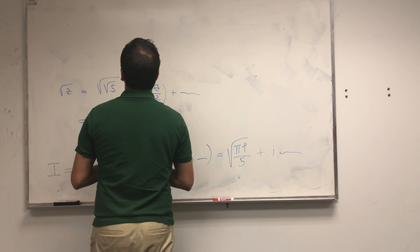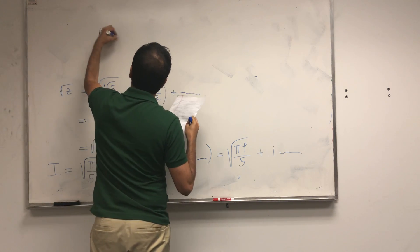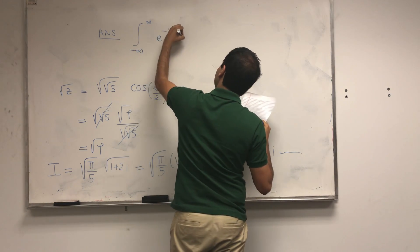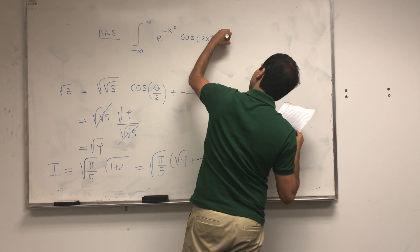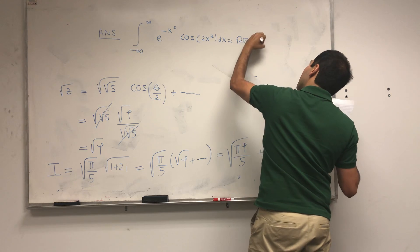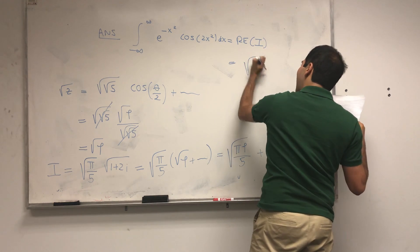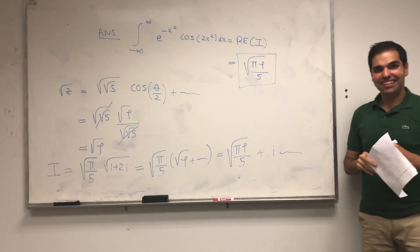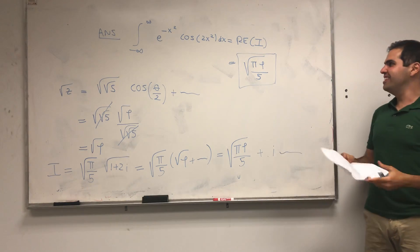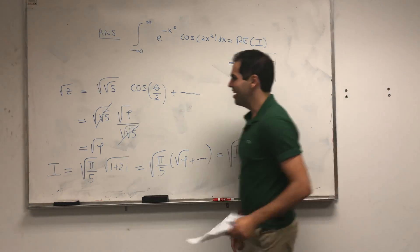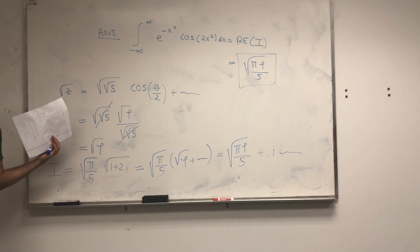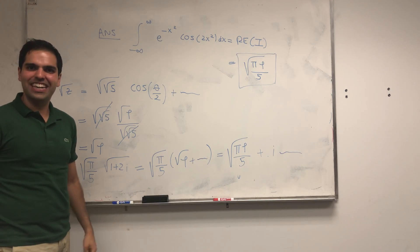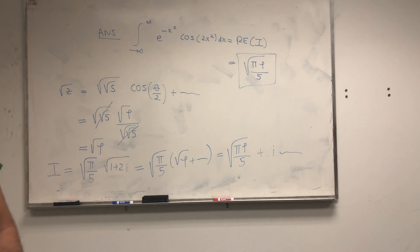To summarize: our integral from minus infinity to infinity of e to the minus x squared cosine of 2x squared dx equals the real part of I, which becomes square root of π·φ over 5 — where φ is the golden ratio. I think it's a beautiful integral where the golden ratio appears. If you like this content and want to see more integrals and more math, please subscribe to my channel. Thank you very much.